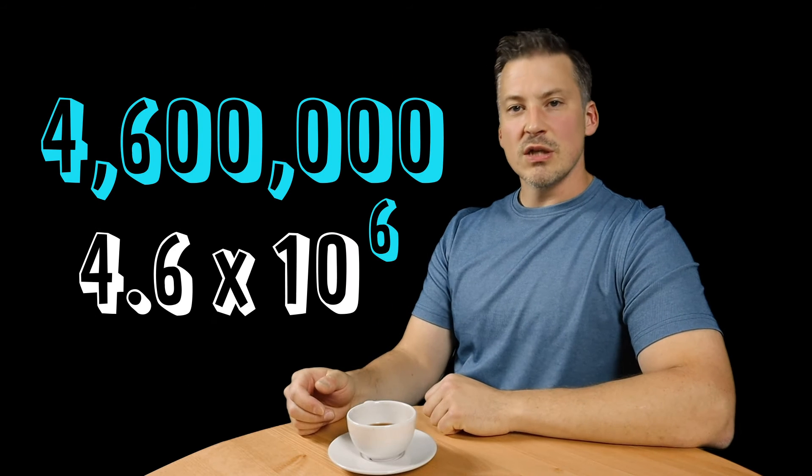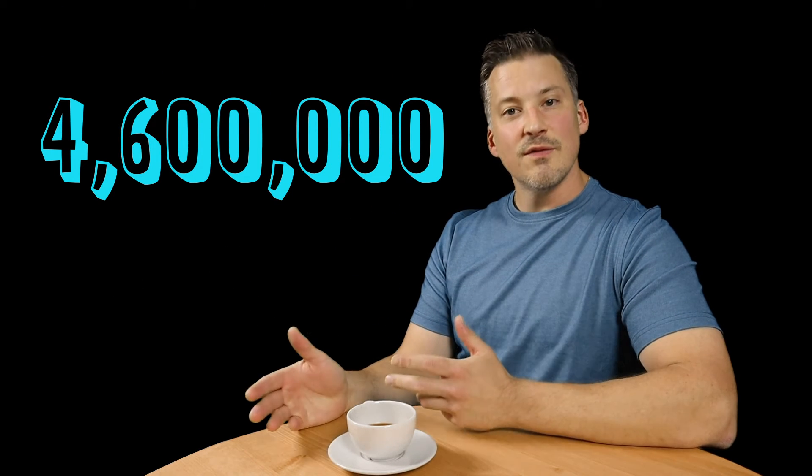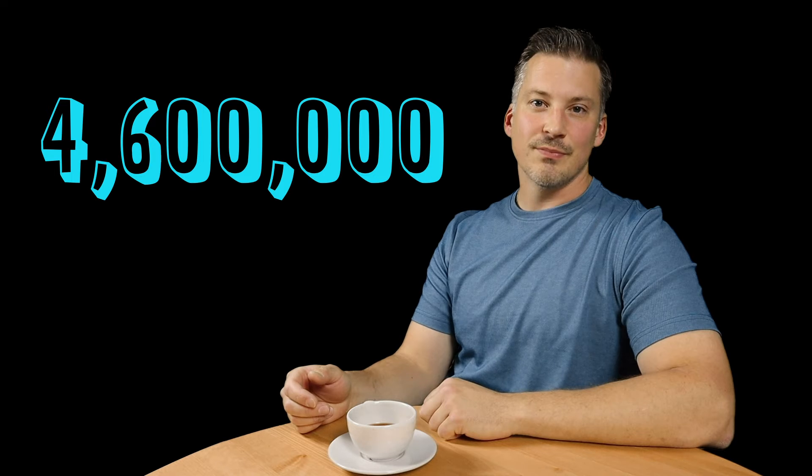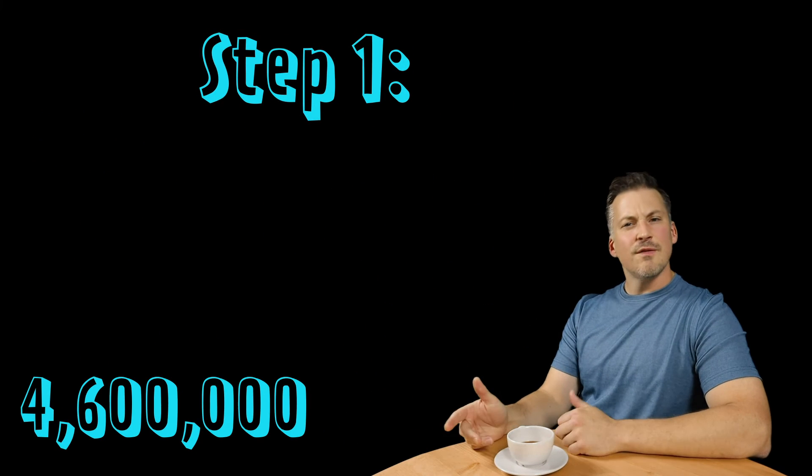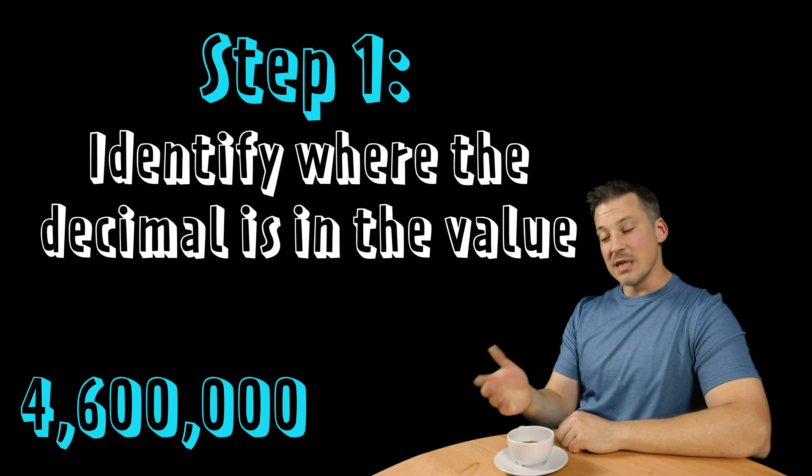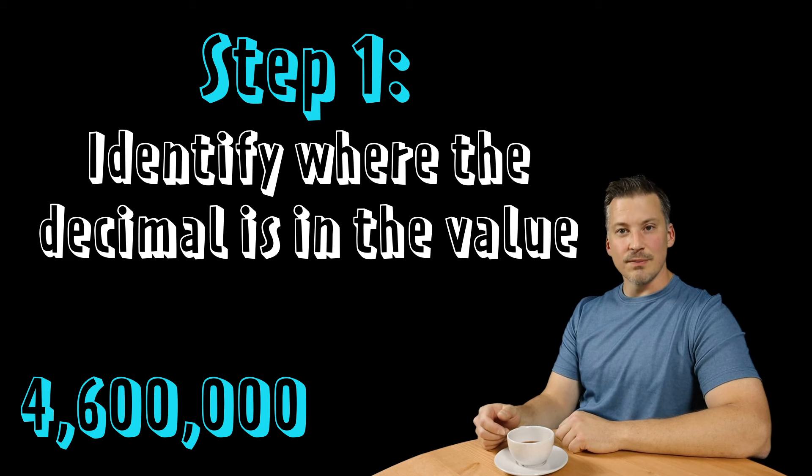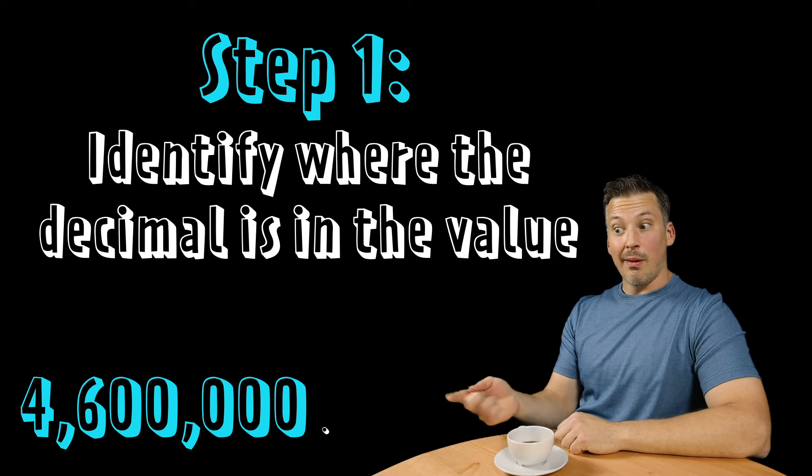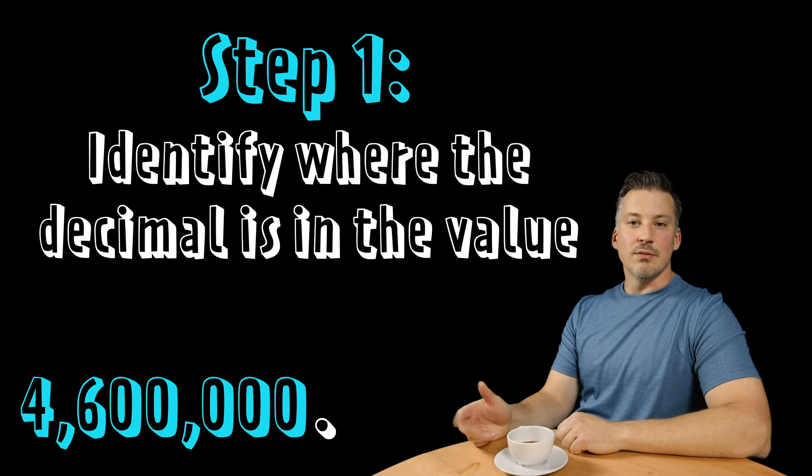So what I want to teach you today is how to convert from a number into scientific notation. We can use a four-step process to do so. Step one: identify where the decimal is in the value you're given. If you don't see a decimal, put it at the end of the value. Simple.